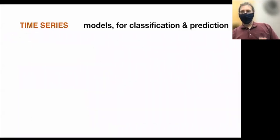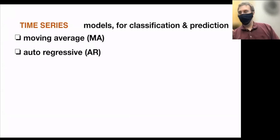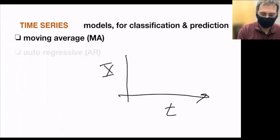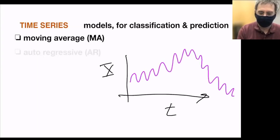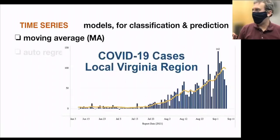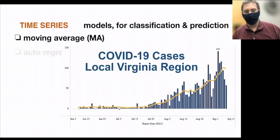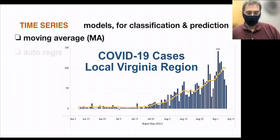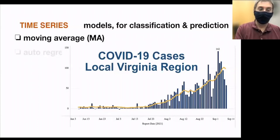There are two main model concepts used for time series classification and prediction: moving average and autoregressive. With a moving average, if you have something fluctuating, you take a moving average to smooth it. We're all used to this from COVID plots using a one-week average. Here, the red line is the moving average for the five counties of Virginia Tech's New River Valley — COVID cases over the past 90 days. The seven-day average, shown in yellow, smooths out huge day-to-day fluctuations and shows a roughly linear growth from mid-summer.